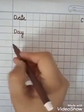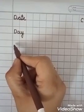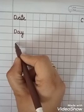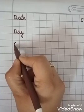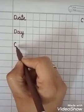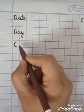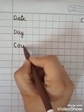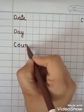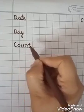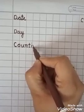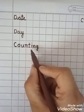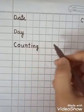Then, come here and write the topic. Topic is Counting. C should be capital and O, U, N, T, I, N, G small. So: C, O, U, N, T, I, N, G — Counting.